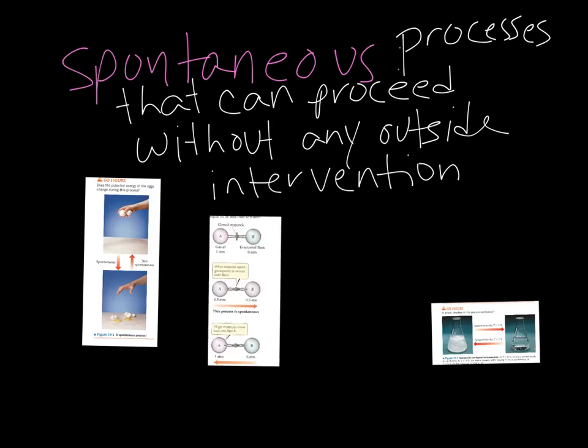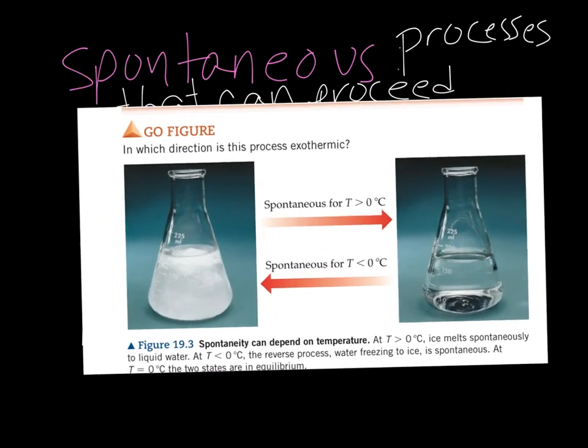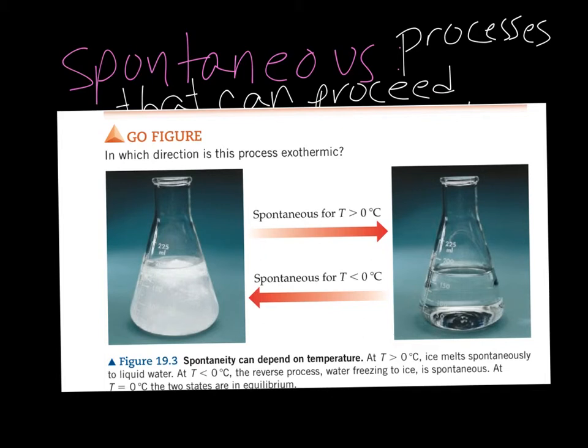Sometimes spontaneous processes are spontaneous at one temperature and not another. If we have ice and the temperature is greater than zero, that ice is going to melt. That is spontaneous. If the temperature around its container is greater than zero the ice is going to turn to water. It would be non-spontaneous for the ice to stay as ice if the temperature outside was greater than zero.